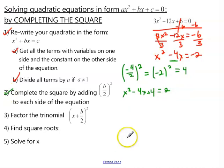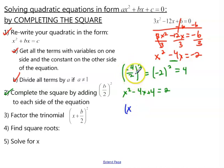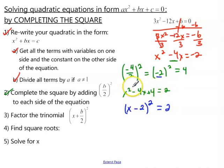Now we've completed step 2. Moving on to step 3, we want to factor the trinomial on the left side. When we add that b over 2 squared, this is a special trinomial that factors as x plus b over 2, quantity squared. Our b over 2 is negative 2, so we get x minus 2, quantity squared equals 2. That's all — we've factored the left side.